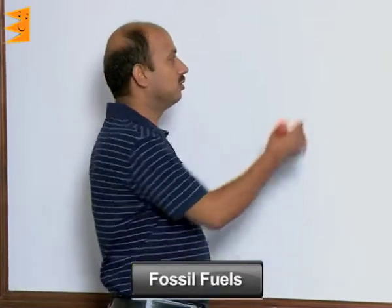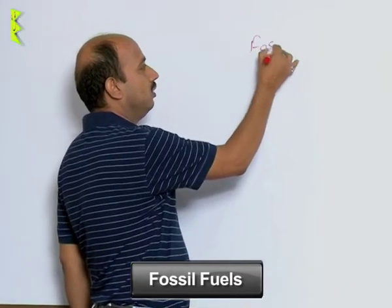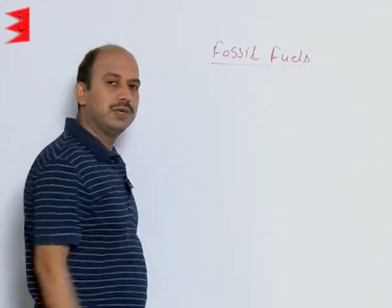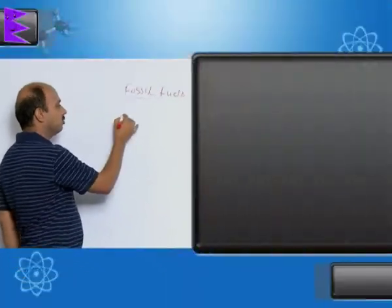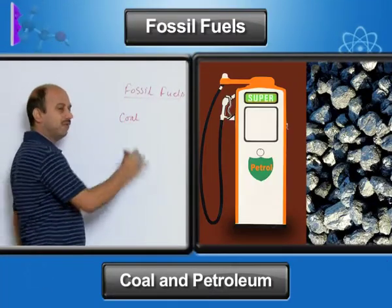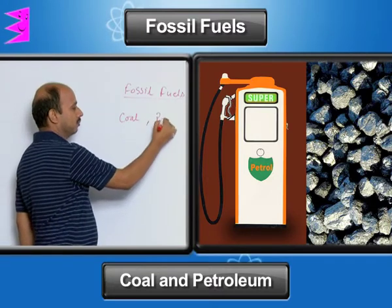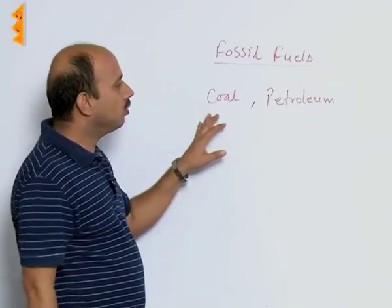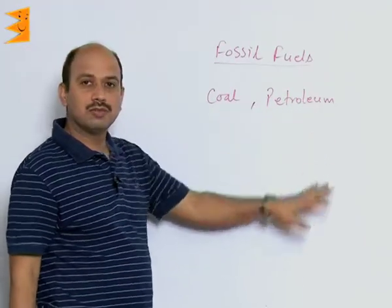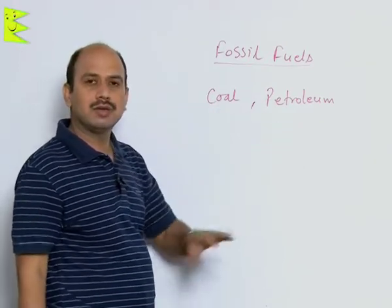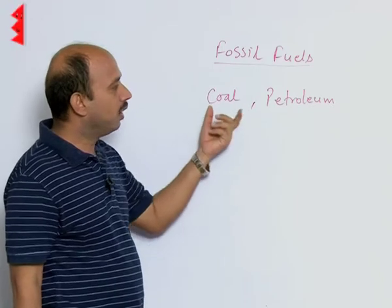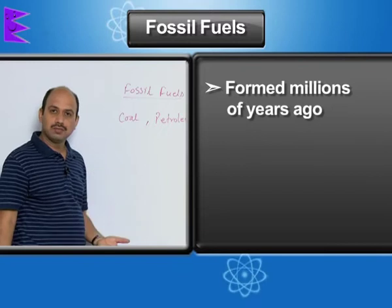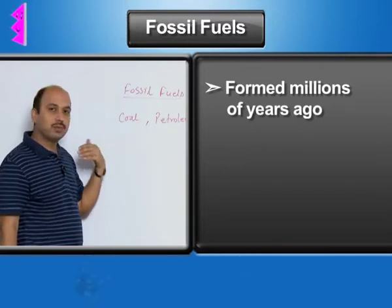We will study about fossil fuels. In fossil fuels, the fuels we keep under this category - the first one is coal, which is a very common fuel, and another one is petroleum. These two are the fossil fuels we use mostly in our daily life. Coal and petroleum were found millions of years ago; they are reserves, or deposits, of the earth.